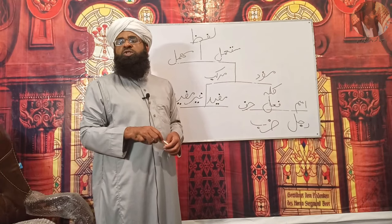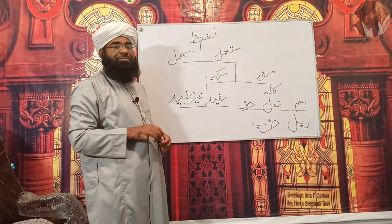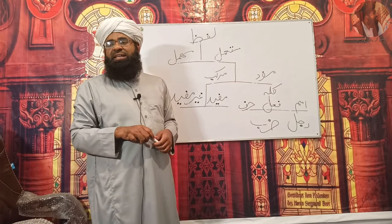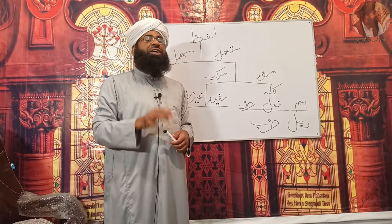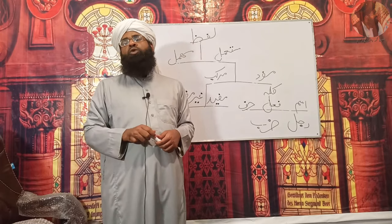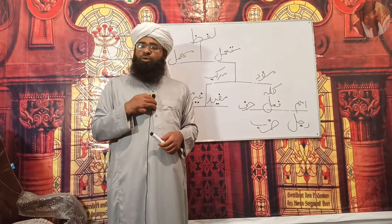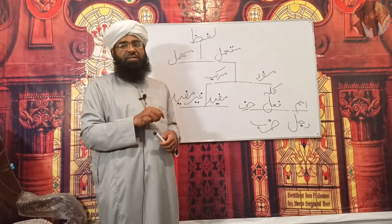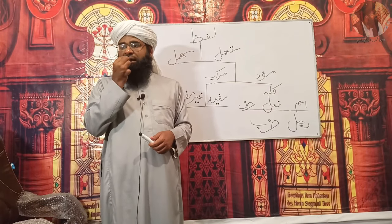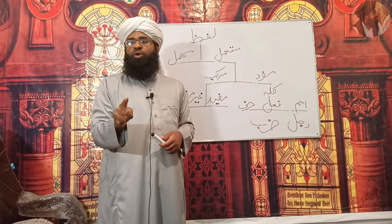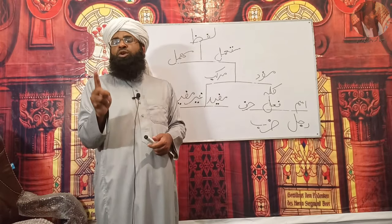مرکب کی دو قسمیں ہیں: مرکب مفید اور مرکب غیر مفید۔ مرکب مفید وہ مرکب ہوتا ہے کہ جب بات کرنے والا بات کر کے خاموش ہو جائے، سننے والے کو کوئی خبر یا کوئی طلب معلوم ہو۔ یعنی سننے والے کو پتا چلے کہ کہنے والا کوئی خبر دے رہا ہے یا کوئی چیز طلب کر رہا ہے، اسے مرکب مفید کہتے ہیں۔